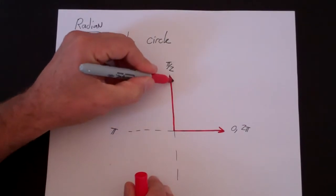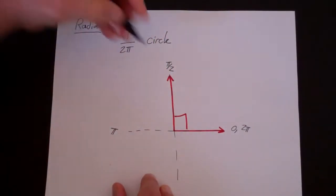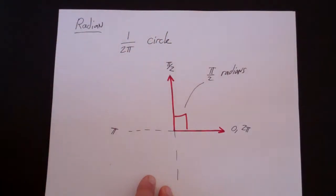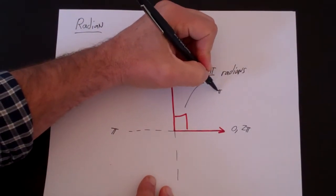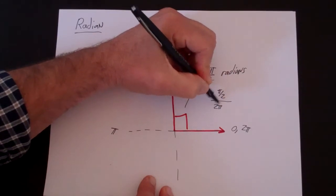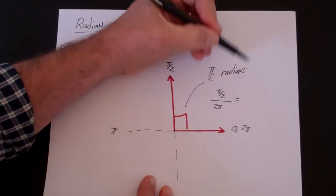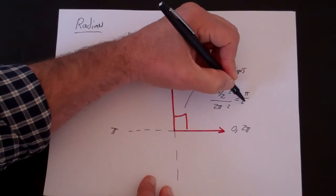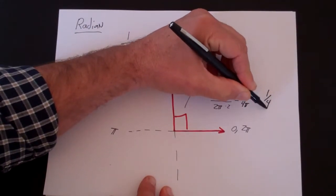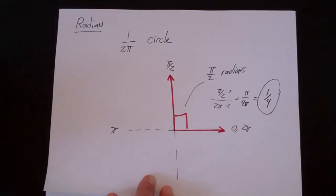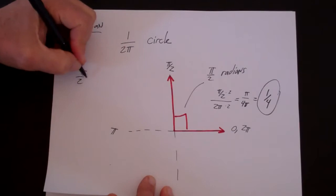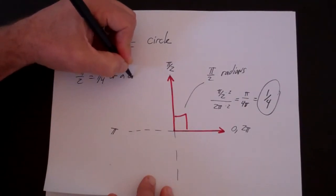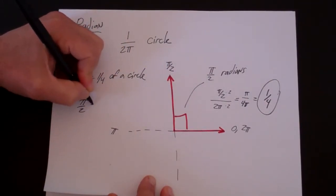So we say that this angle right here, since it's 1 fourth of a circle, is π over 2 radians. Let's be careful there. If we think about π/2 over 2π, then that's simply equal to, multiply this side by 2 and this side by 2, that's π over 4π, or simply 1 fourth. So π over 2 is defined as 1 fourth of a circle. Another way to think about it is it's just 90 degrees. π over 2 is the same as 90 degrees.